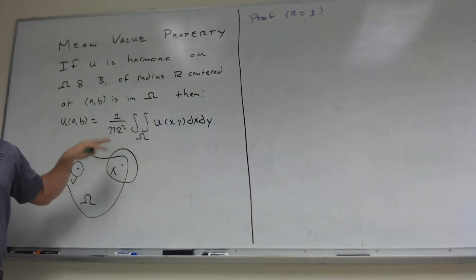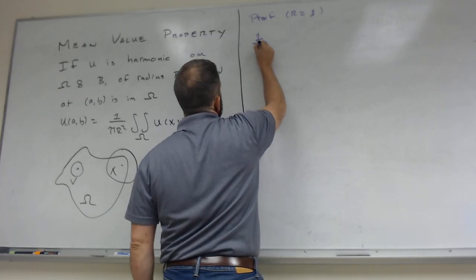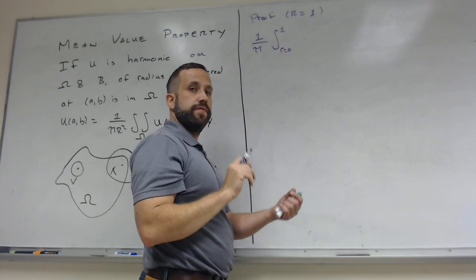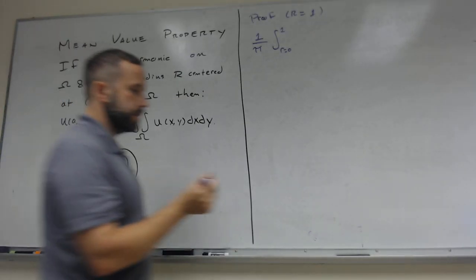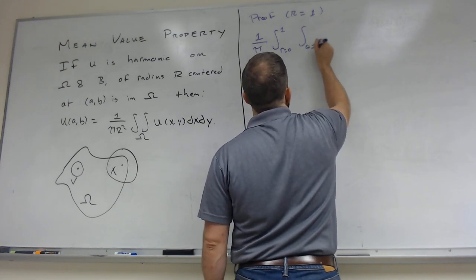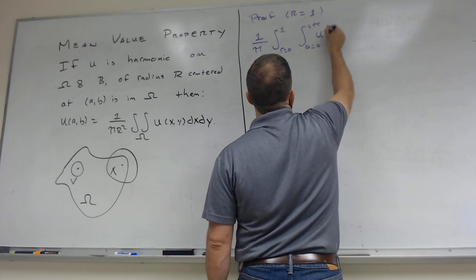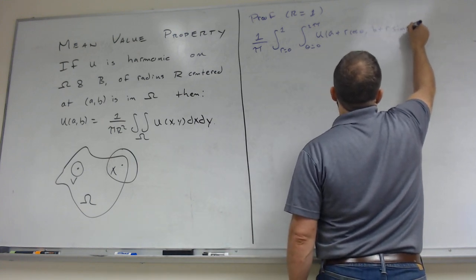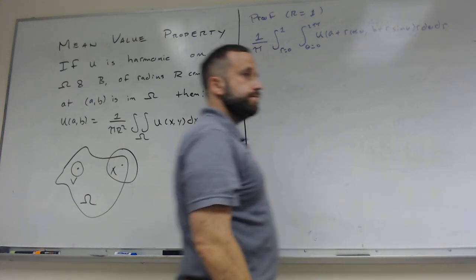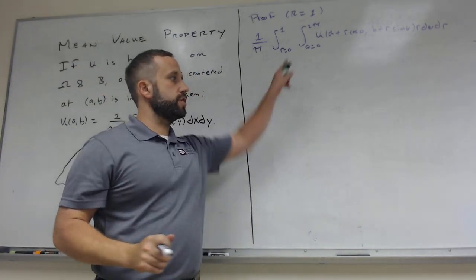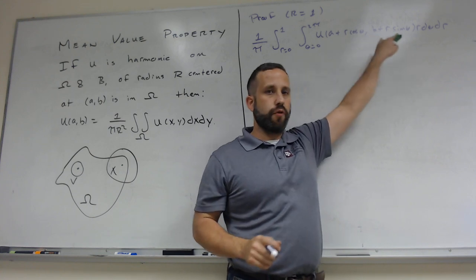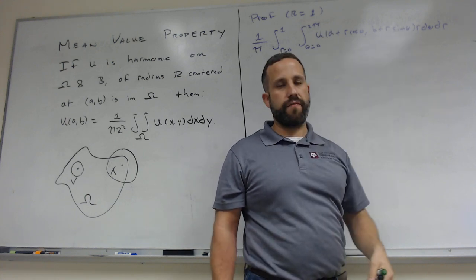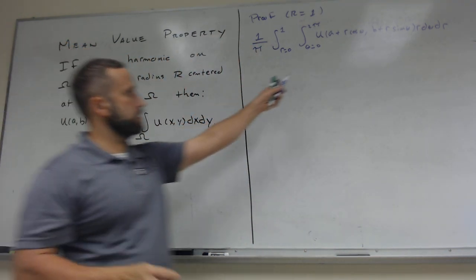I'm going to compute this integral as a polar integral. So I'm going to have 1 over π times the integral R equals 0 to 1 — I integrate to 1 because the radius of the ball is 1 — and θ going from 0 to 2π, integrating U of (A + r cos θ, B + r sin θ) · r dθ dr. This is normal polar integration over a ball centered at (A, B), so A + r cos θ, B + r sin θ is the parameterization for the ball of radius r centered at (A, B).